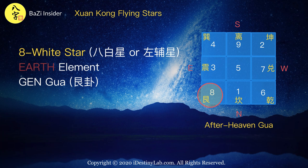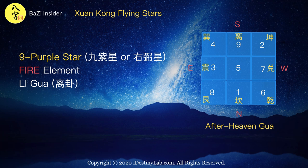Last but not least, 9 purple star is also known as Jiu Zi Xing or Yiu Bi Xing in Chinese. Its fine element is fire and it is located inside the Li Gua of the 8 trigrams Ba Gua palaces.